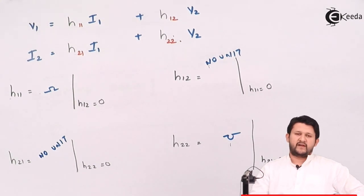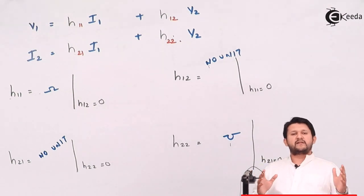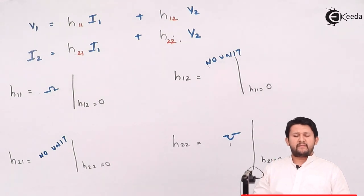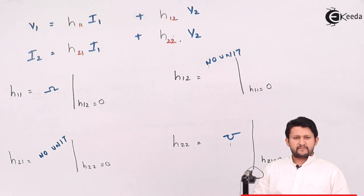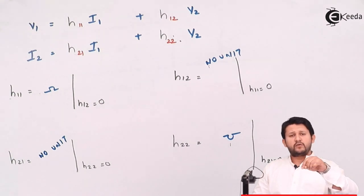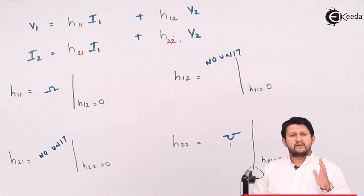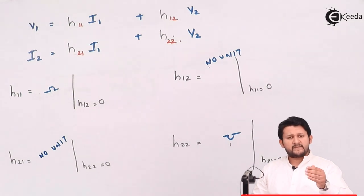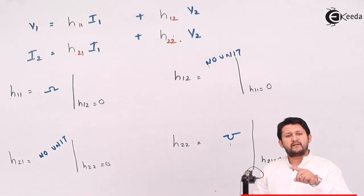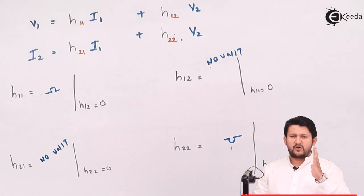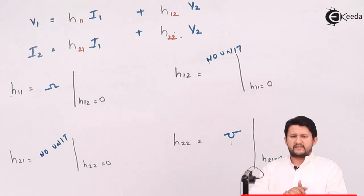After getting the units, write them down. To summarize: when solving hybrid parameters, first get the Y parameter equations; then modify Y parameter equation number one to get H parameter equation number one; then put that H parameter equation one into Y parameter equation number two to get H parameter equation number two. Please practice a lot and be careful with plus and minus signs. Thank you, signing off.